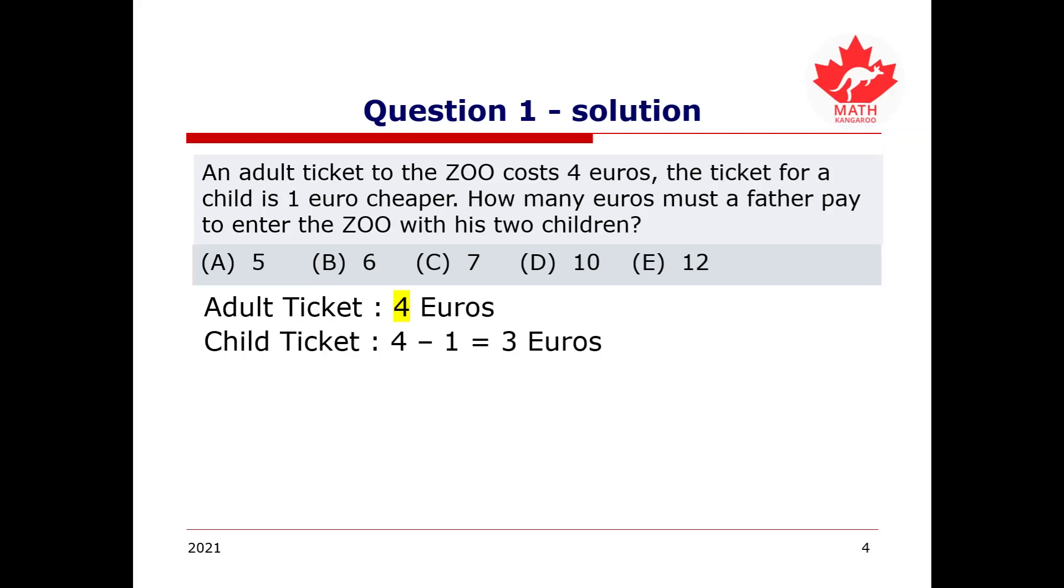Now, since the father has 2 children, we will have to go 3 plus 3 because there are 2 children, and we will have to add 3 two times, and we get 6. Therefore, having the 2 children will cost us 6 euros. And then, because we still have to account for the father as well, and we know that an adult ticket is 4 euros, we can simply add 4 and 6 to get 10. And therefore, we know that a father must pay to enter the zoo with his 2 children will cost him 10 euros. Therefore, we can conclude that D will be our final answer.